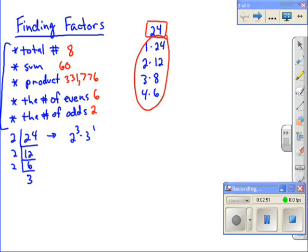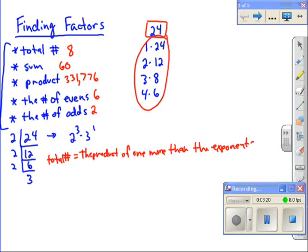So the first thing we're going to do is find the sum or the total number. And the total number is always equal to the product of one more than the exponents. The product of one more than the exponents.